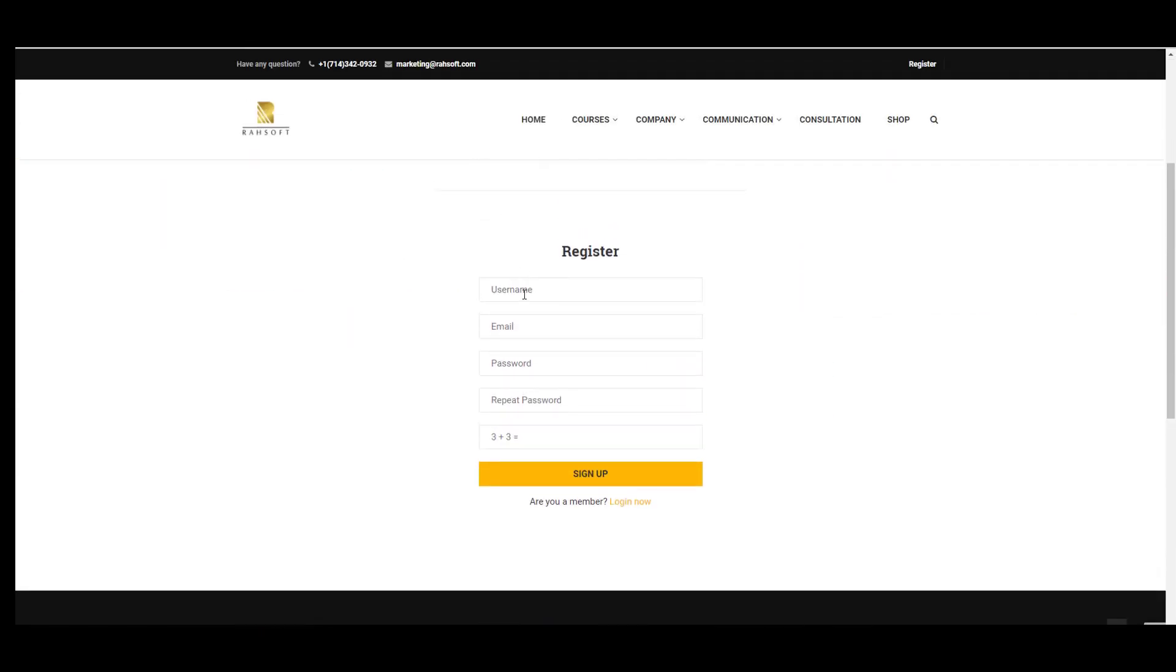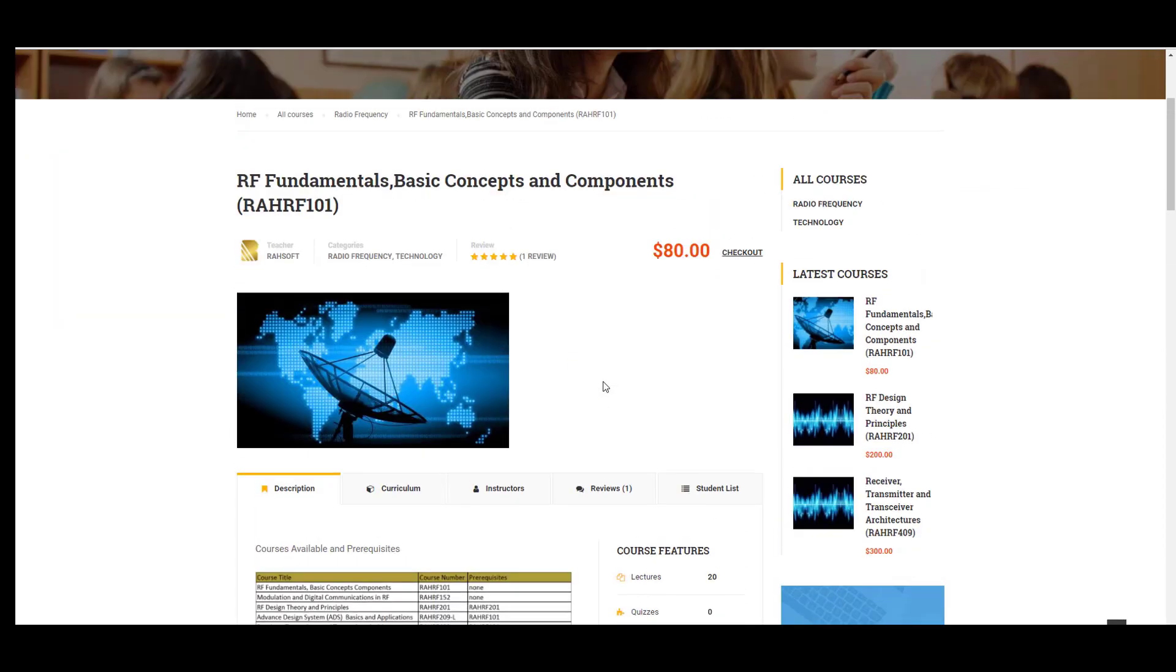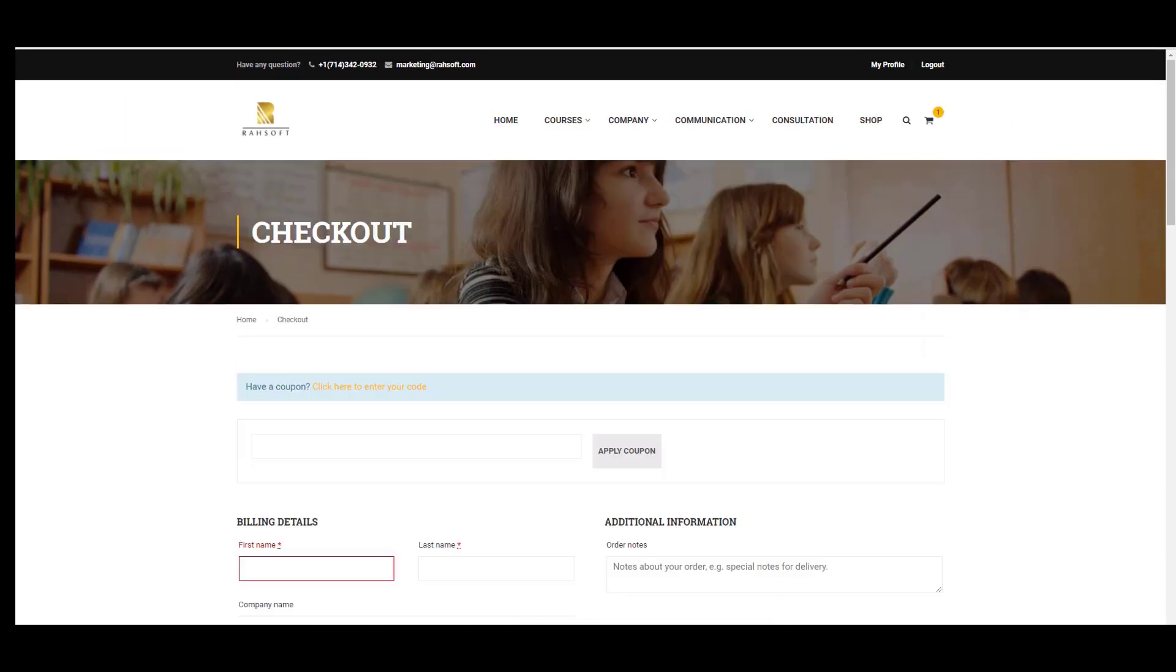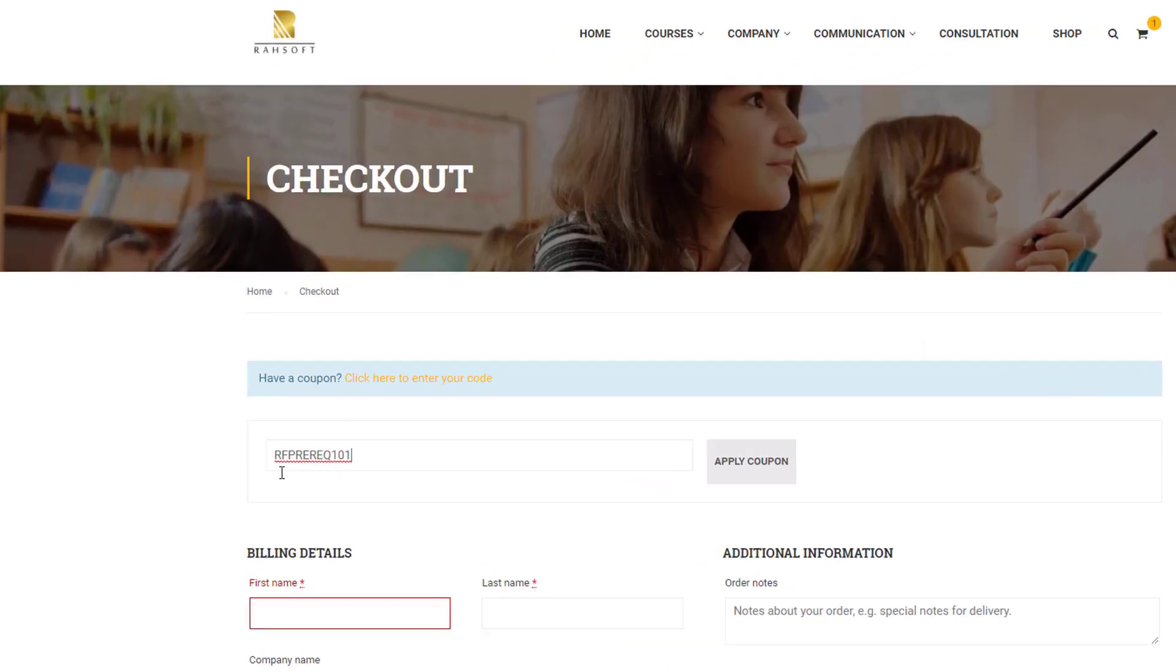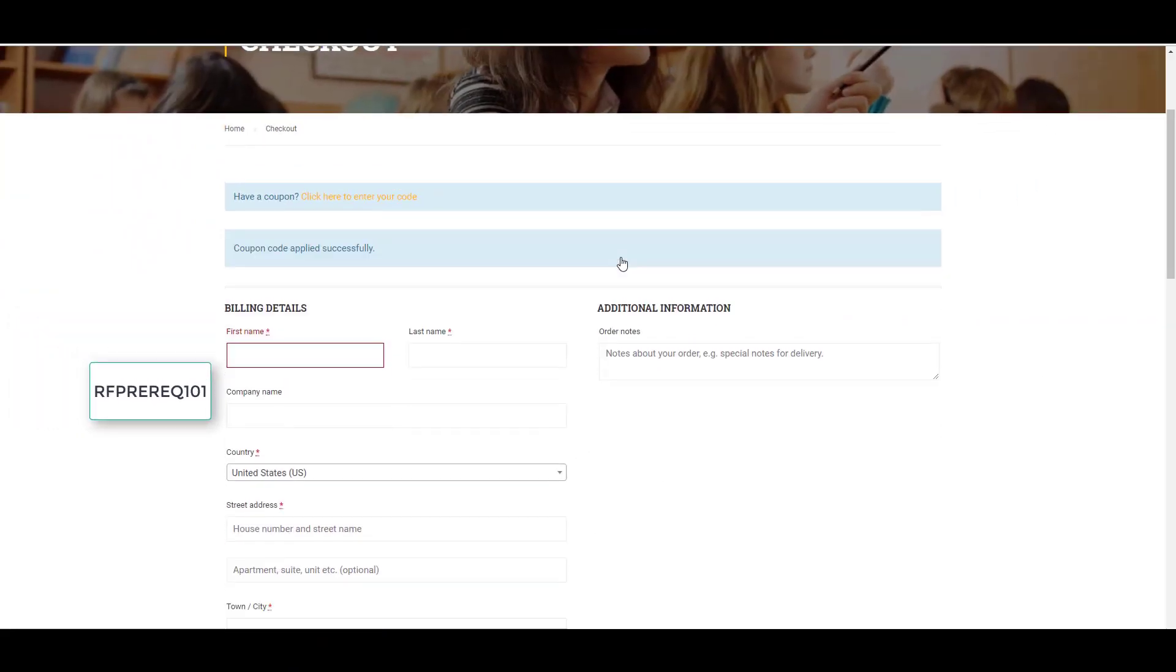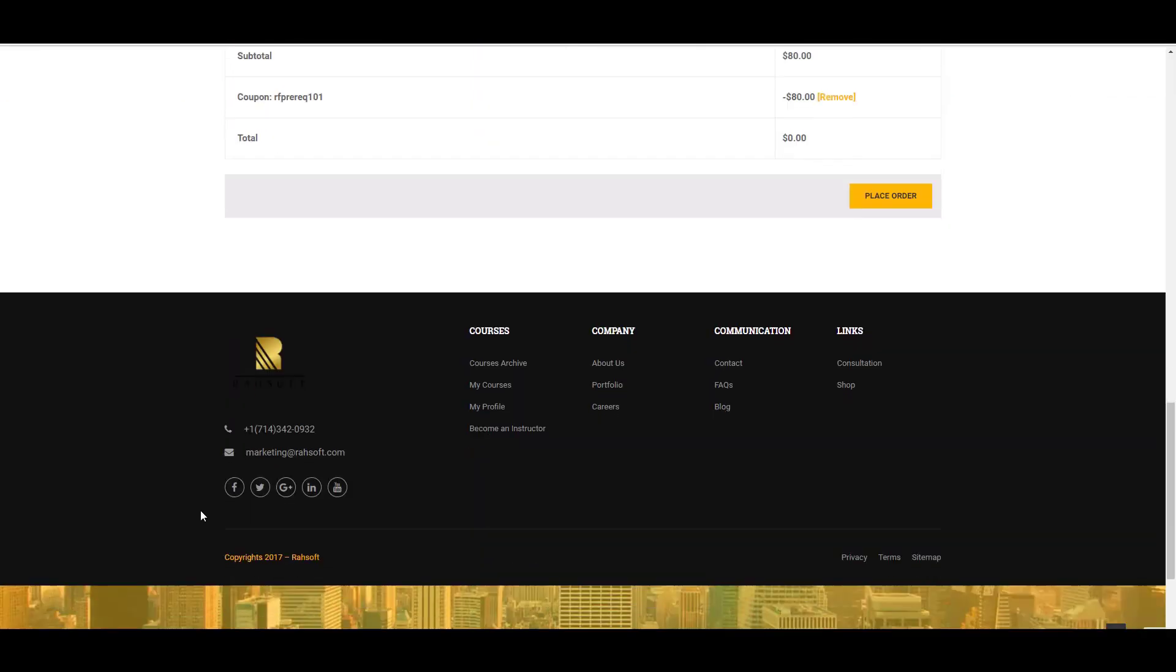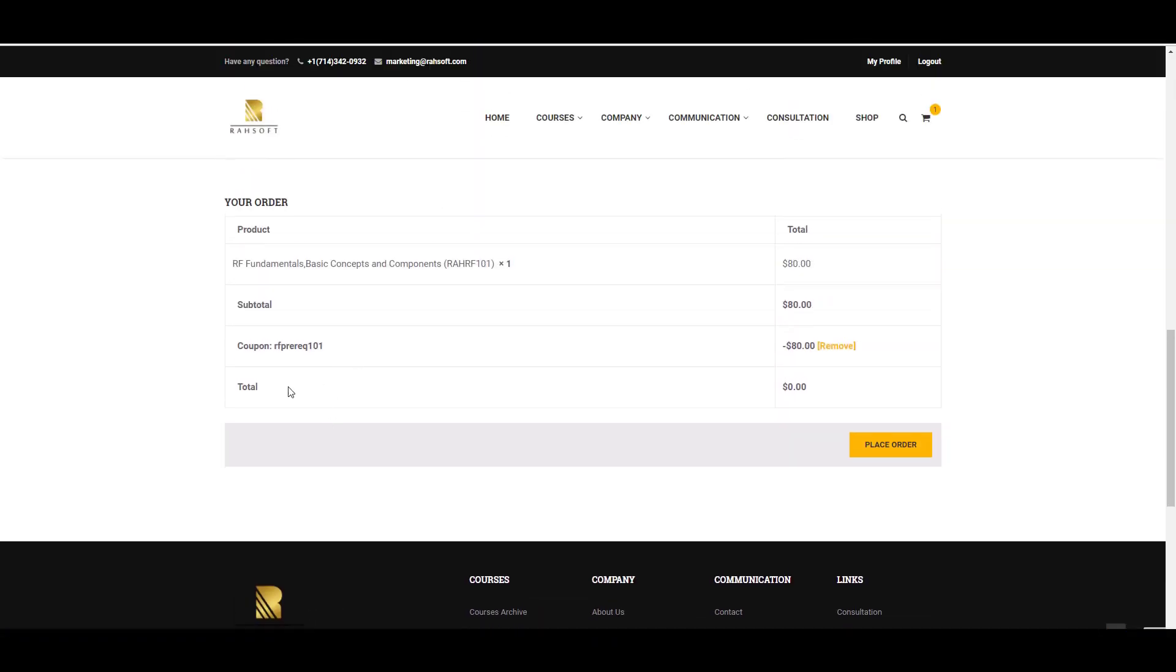You need your username, email, password, and you have to answer the security question and then press the sign up button. You will be able to register on our website. After that, go to the course landing page, go to checkout, and click to enter your code. Put the coupon code here and apply the coupon. Then you will have this course for free. You won't pay anything for this course.